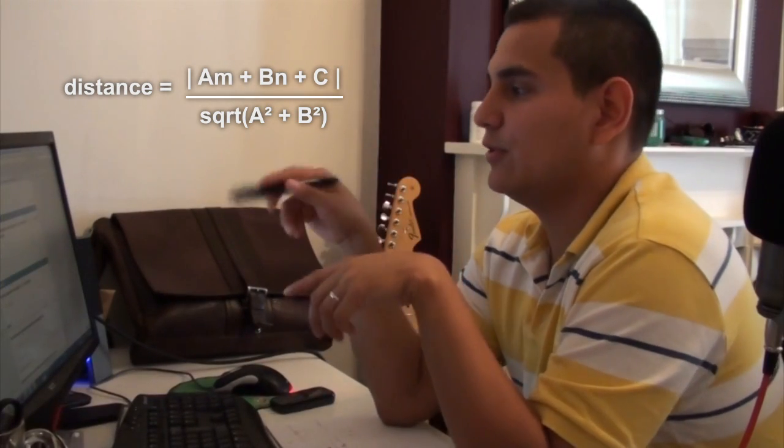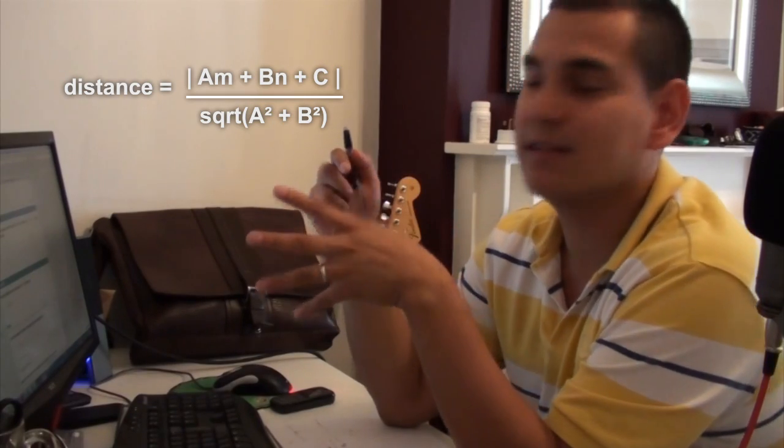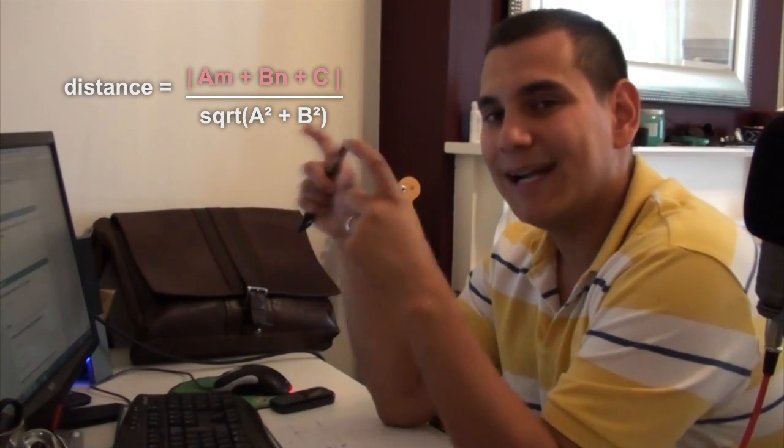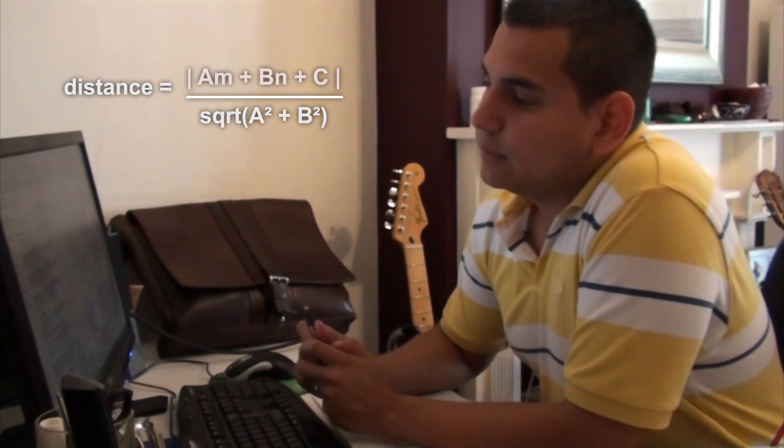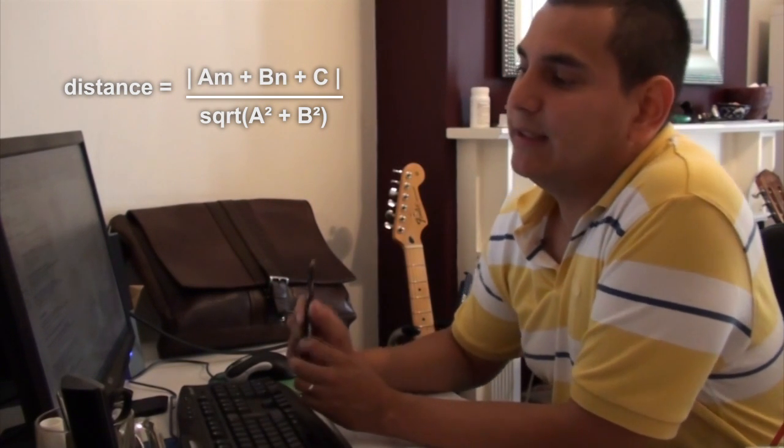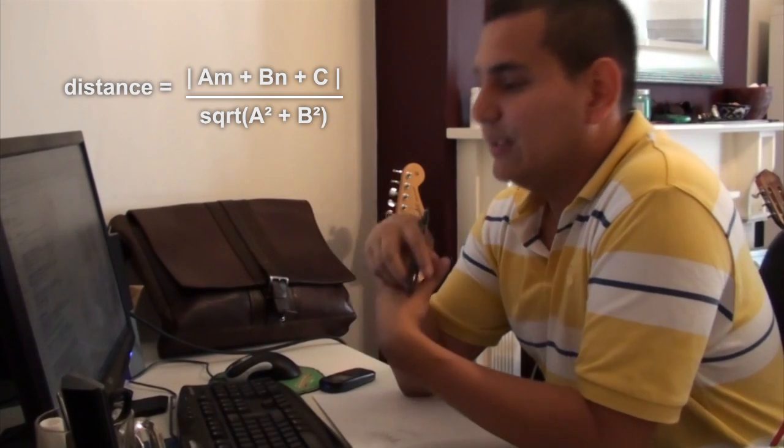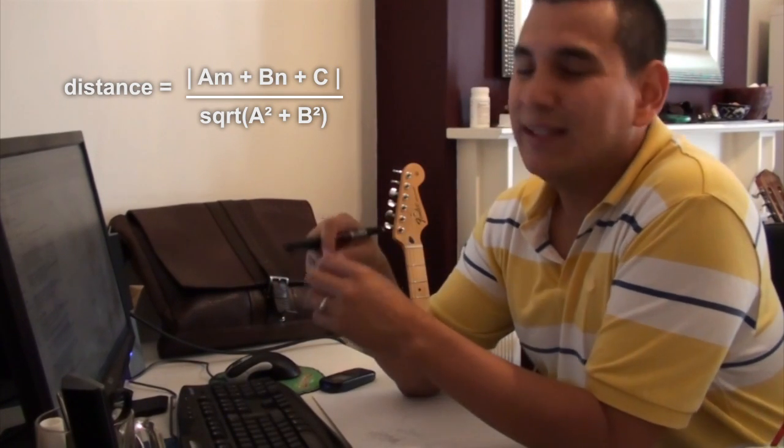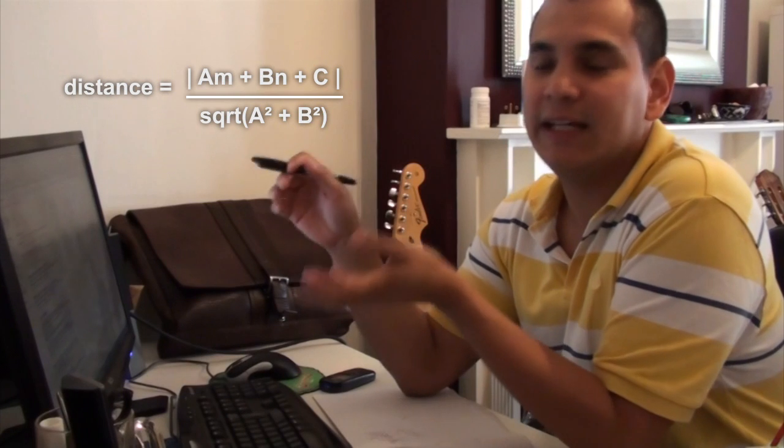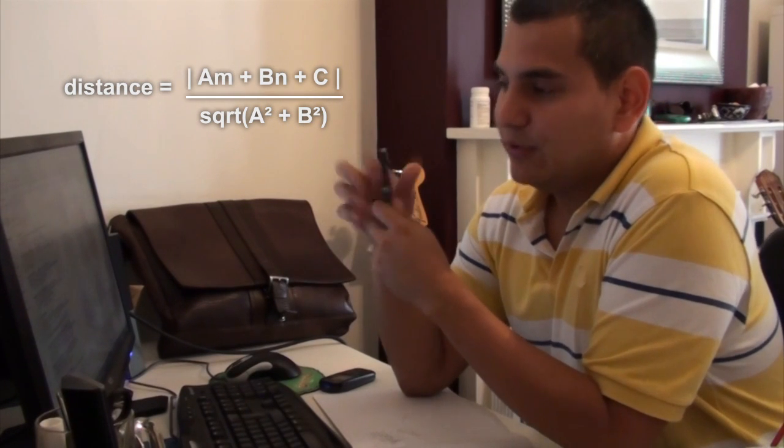So if we take a look on this equation of the distance between parallel lines, we can see that the top of it has involved the line equation. The line equation is really important to understand when we are dealing with vectors. Unfortunately, there are many ways, different equations, to write down exactly the same straight line. And it can be confusing sometimes.